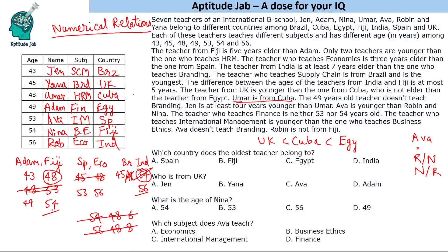Which country does the oldest teacher belong to? The oldest teacher belongs to India. For UK, we have Yana. The age of Nina is 54, and Ava teaches International Management. This is the solution to the set and the answers to all the questions.